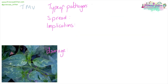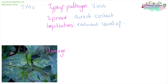Tobacco mosaic virus is, unsurprisingly, a virus. It is spread from plant to plant by direct contact. The implications are a reduced level of chlorophyll, which is why you can see the mosaic pattern on the leaves — some areas have a different level of chlorophyll than others. Reduced chlorophyll means reduced photosynthesis, which leads to reduced sugars, meaning a lower yield from the plants, whether that's tobacco plants or tomato plants, which is going to affect the commercial side of a business.